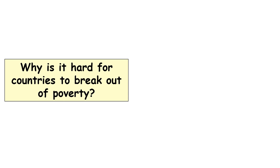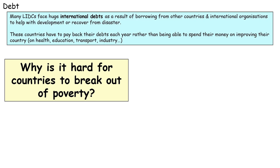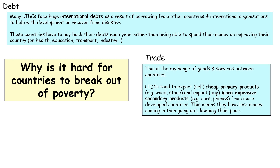Why is it so hard for countries to break out of poverty? The first reason is debt. Many poorer countries face huge debts because they borrowed money from international organizations and other countries, and each year they're paying that debt back rather than spending the money on improving their country. Another reason is trade: poorer countries tend to sell cheap primary products such as wood, while having to buy expensive secondary products like cars and phones from richer countries. Constantly selling cheaper things and buying expensive things means more money going out than coming in, which keeps a country poor.